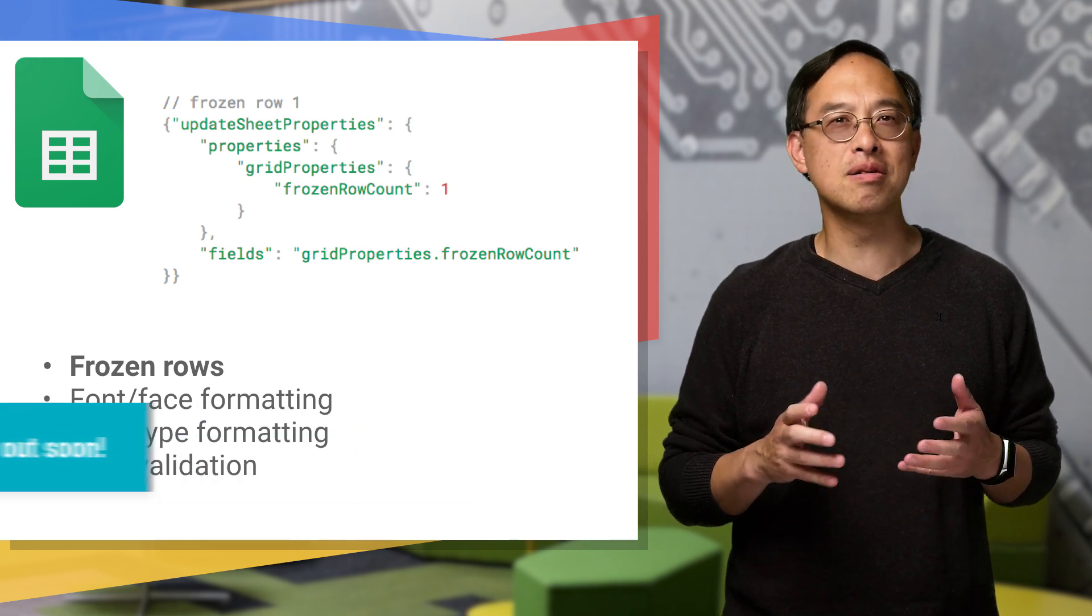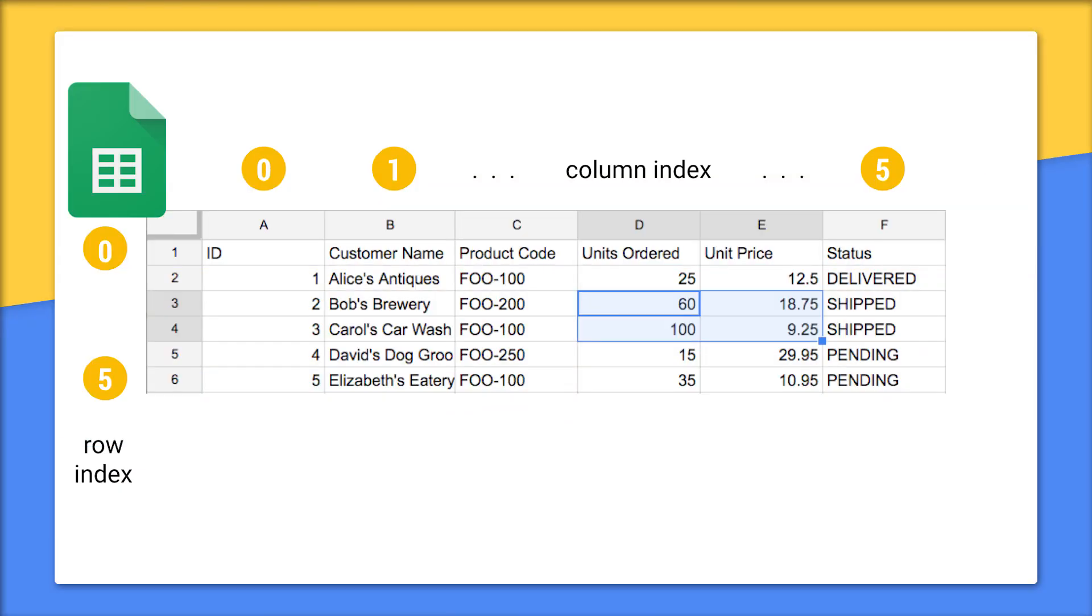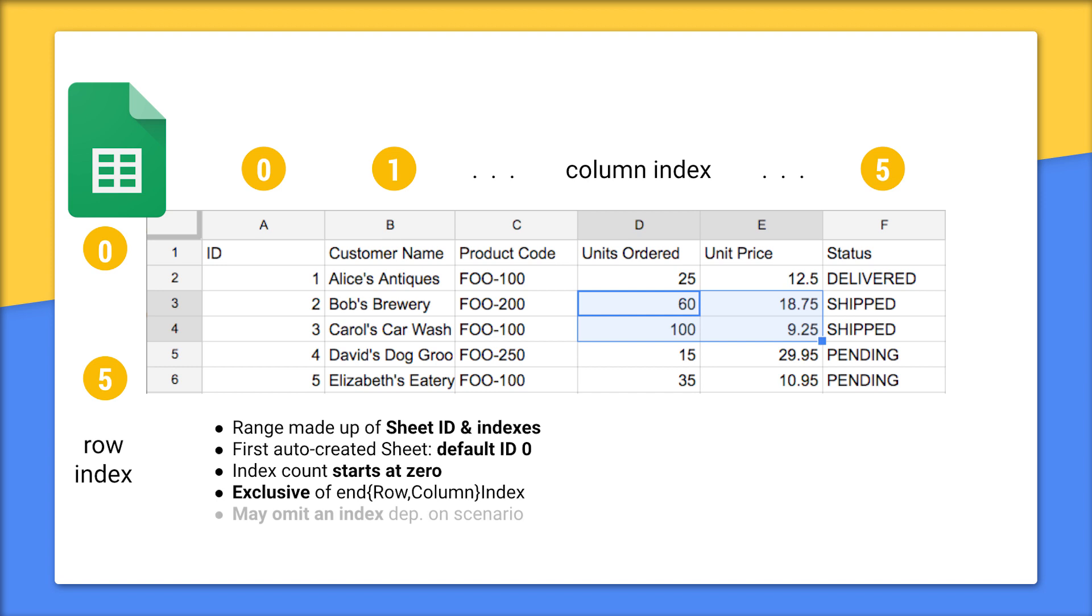First, a range is made up of a sheet ID and indexes. Next, when you create a brand new spreadsheet, the default sheet that's created for you has an ID of 0. Like most programming languages, counting starts at 0, not 1. So here, you can see column names and row numbers, and mentally convert them to zero-based indexes. Also, ranges are exclusive of all end indexes. That means that they go up to but do not include the end index value. Lastly, know that you can leave out an index when you want to take the default. We'll discuss each situation as they come up.